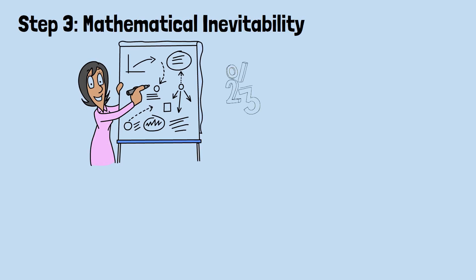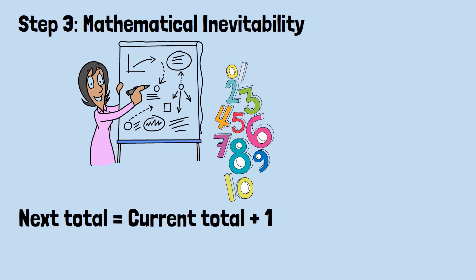Step 3: Mathematical inevitability. The genius of this strategy lies in a simple constraint. Since players can only add numbers from 1 to 10, you're ensuring that consecutive positions in your sequence are always exactly 11 apart. Your opponent can never skip over your next target number.